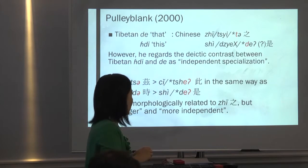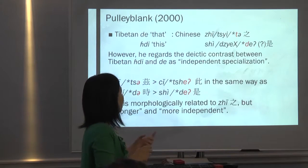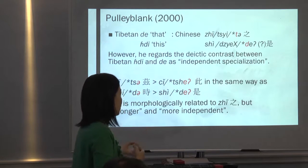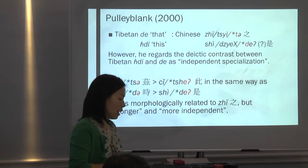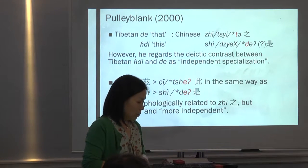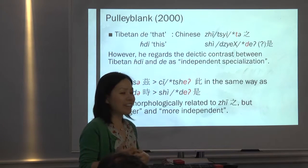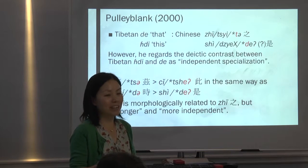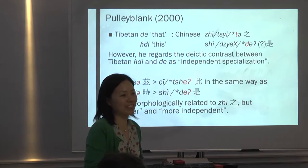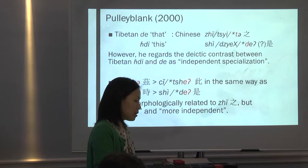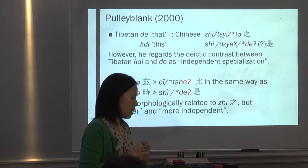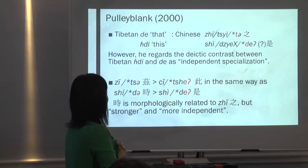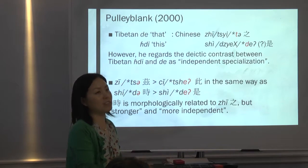Seeing these Tibetan cognates makes me believe my thinking is right, but Pulebrain doesn't think that this kind of deictic contrast between the Tibetan demonstratives applied to Chinese — he rather thinks it's something independently developed in Tibetan. In any case, writing in English makes us wonder what kind of phonetic value to assign, whereas when writing in Chinese you don't really have to give a pronunciation to zhi or shi. So when I did my dissertation, I asked around and made sure that dental is the right form.